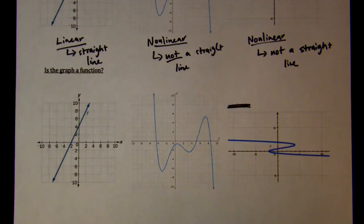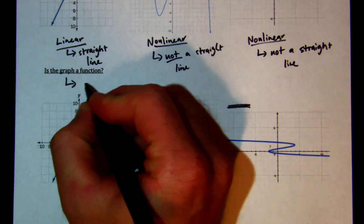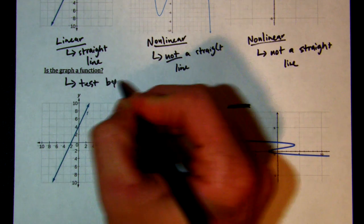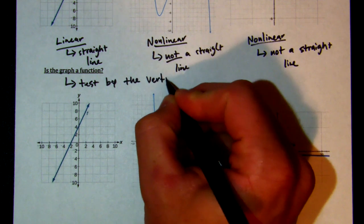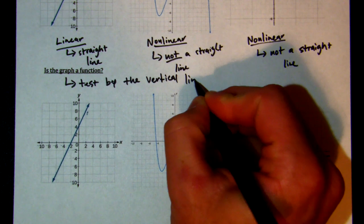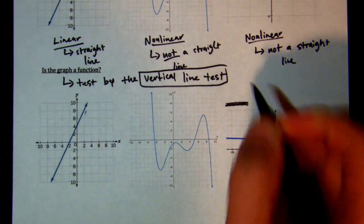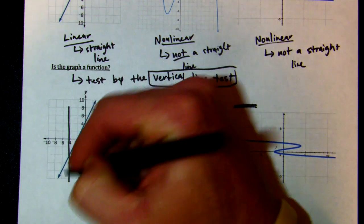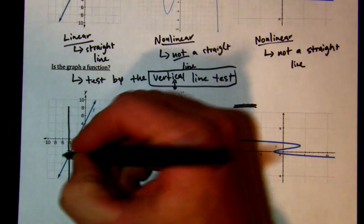Now let's take a look at what a function is or not, because they're different. When we look at a graph, we test it by the vertical line test. This is our bread and butter to tell if a graph is a function. We just draw a vertical line — remember, vertical means straight up and down — through our graph.